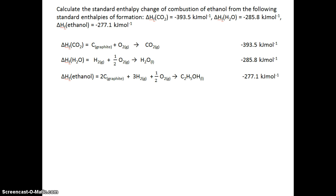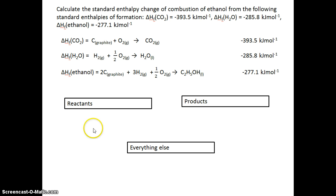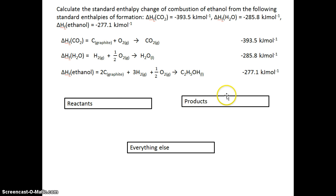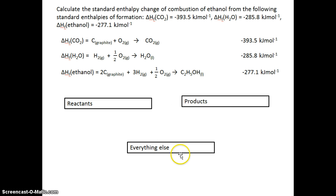The next step is to start to construct your triangle. In your triangle, you always put the reactants of the equation you're interested in in one box, the products of the equation you're interested in in another box, and everything else which appears in your data but is not a reactant or a product goes into the third box.